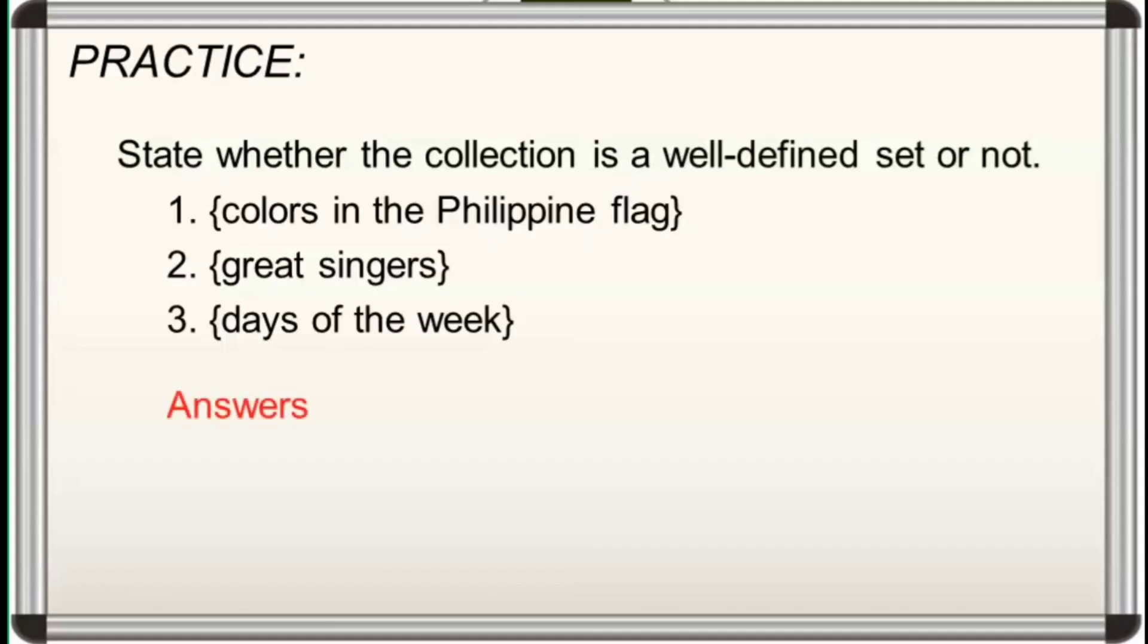Let's discuss the answers. For number one, it is obviously well-defined because one knows exactly which colors belong to the set. For number two, it is not well-defined because the characteristic being a great singer depends on the perception, standards of every individual. So, one does not know exactly who among the singers belong to the set.